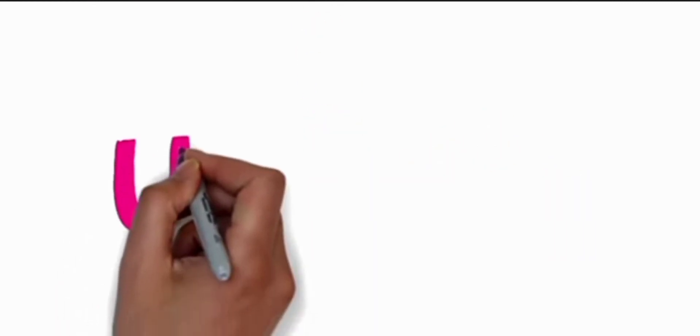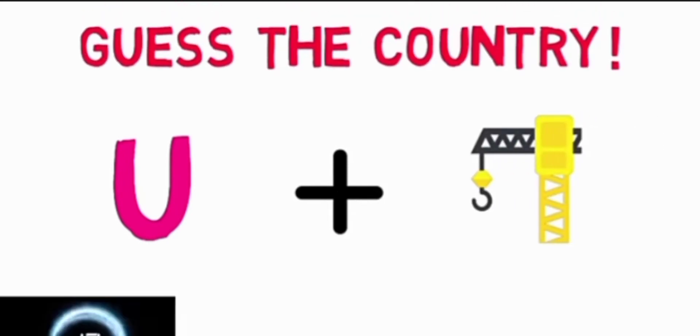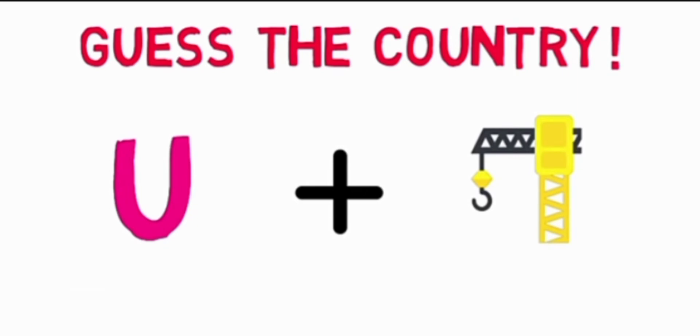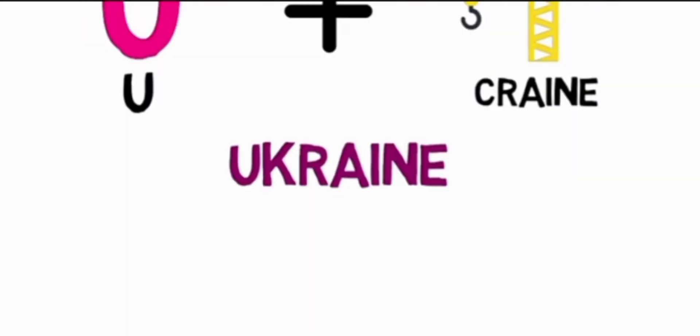Number three: this is letter U plus this emoji of a crane. This is letter U and this is crane, so this country is Ukraine. I know the country is not familiar, but this is also a country, so it's new for us.